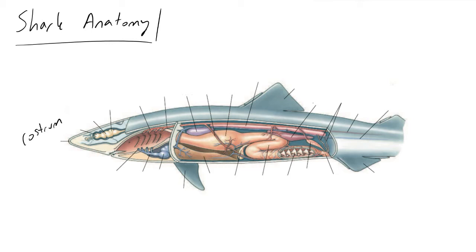The mouth is on the ventral side of the shark, and because of this it has made sharks very well adapted for bottom feeding if they need to. This is also referred to as benthic feeding, and this was a very key advantage that occurred early on.